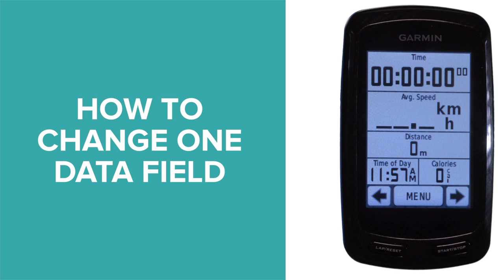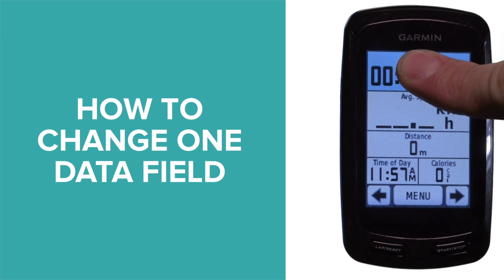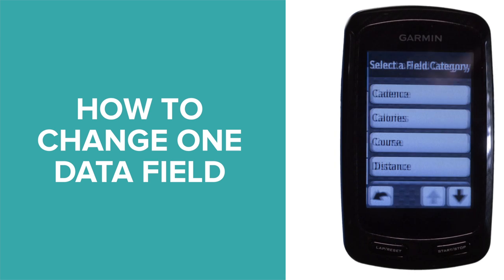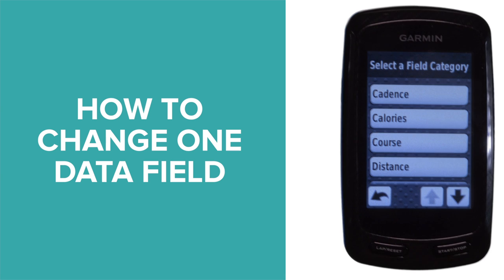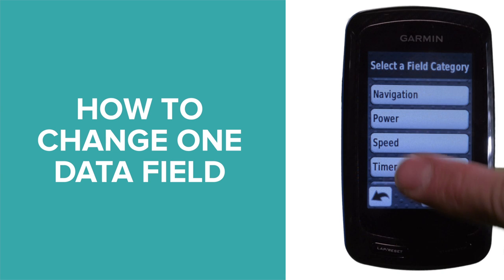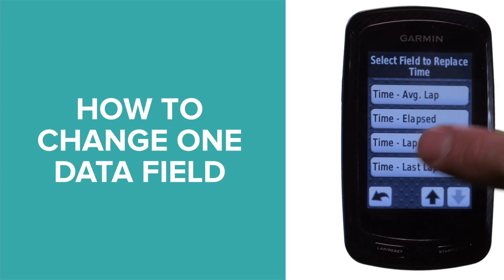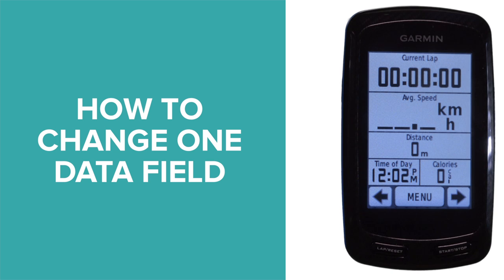If you want to quickly change one data field from the original page, hold on one of the boxes — that will highlight it. Once you take your finger off it will bring up the field categories. So we're going to change from overall elapsed time of the ride and instead click on the time for the current lap.